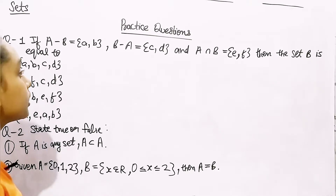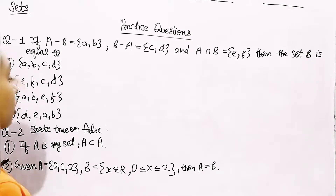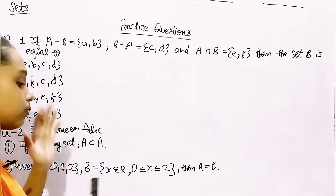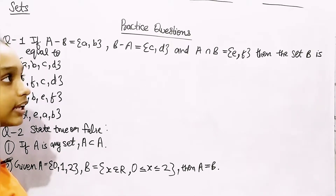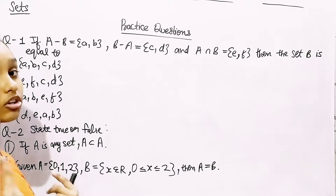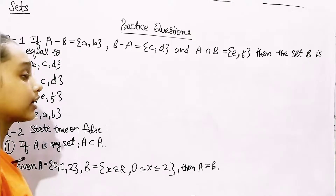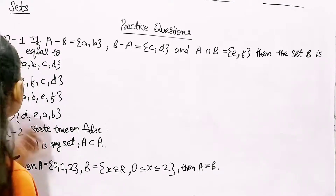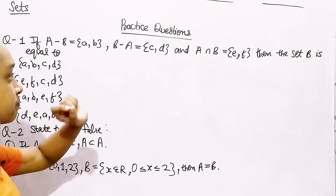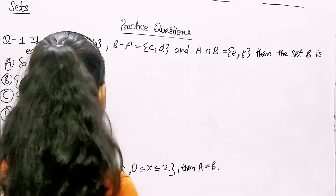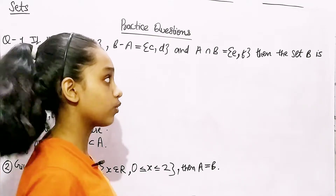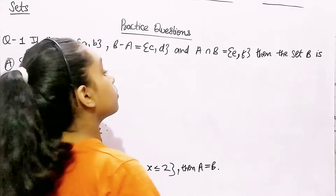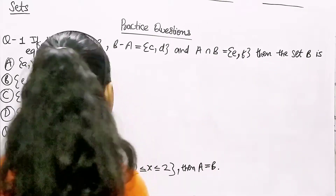This is actually based on our last topic: practical problems on intersection and union of sets. In this question, the intersection of two sets is given to us, and their differences are also given to us. So what do we have to find? We have to find set B.